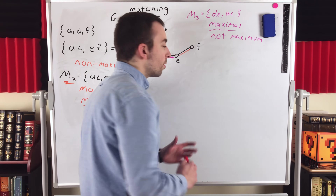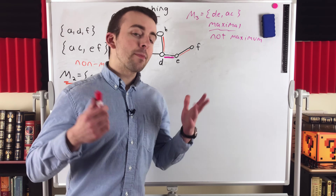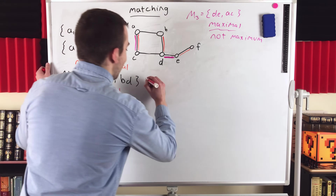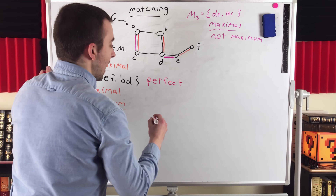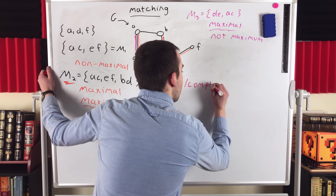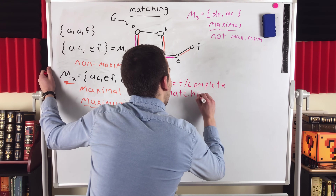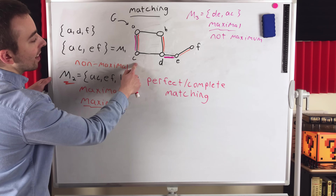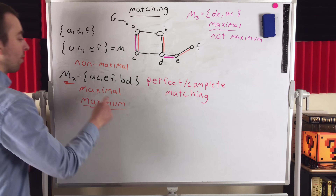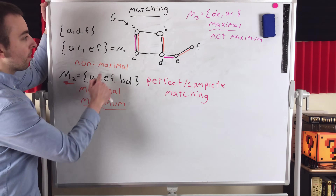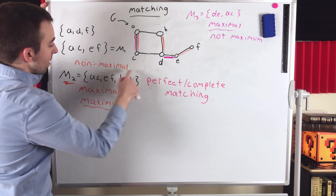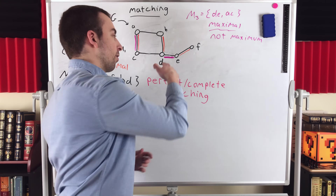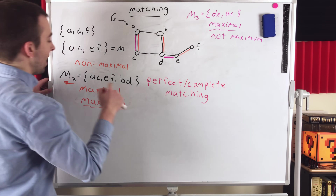The last part of the question was about perfect matchings and complete matchings. Quick answer: they're the same thing. M2 is a perfect or complete matching. A perfect or complete matching in a graph G is a matching such that every vertex in the graph is incident with an edge in the matching. We see that here — A, B, C, D, E, and F are all matched. This is a perfect or complete matching because it matches every vertex in the graph.